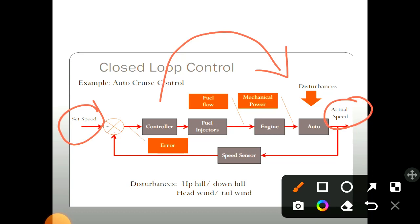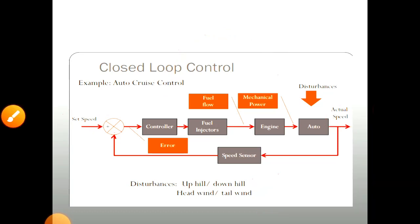Many disturbances occur when an automobile moves uphill, downhill, with headwind, or tailwind. These are some disturbances which reduce the actual speed of the automobile, and that actual speed we have to control. The automatic speed of the vehicle is controlled with the help of the auto cruise control system.